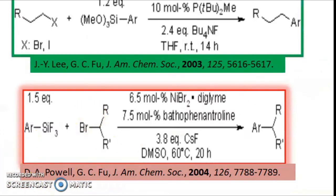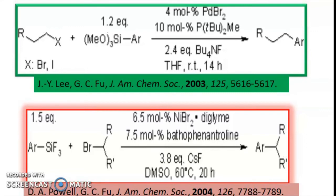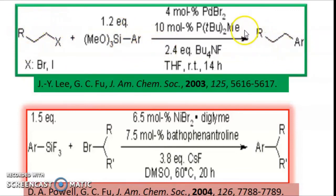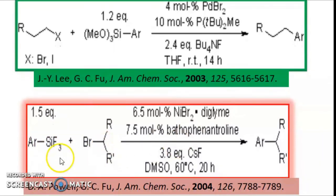Let us see a few examples of Hiyama coupling. In the first example, an alkyl halide is reacted with a silyl compound using a methoxy group attached to the silyl group, and it is the aryl group and alkyl group which couple together to get another organic compound. In the second example, silyl fluorides are used to improve the reaction rate, and the alkyl halide couples with it to get another organic moiety. One example was published in 2003 and the other in 2004.